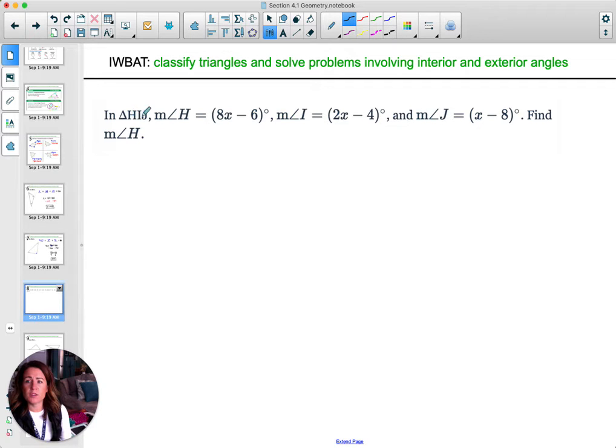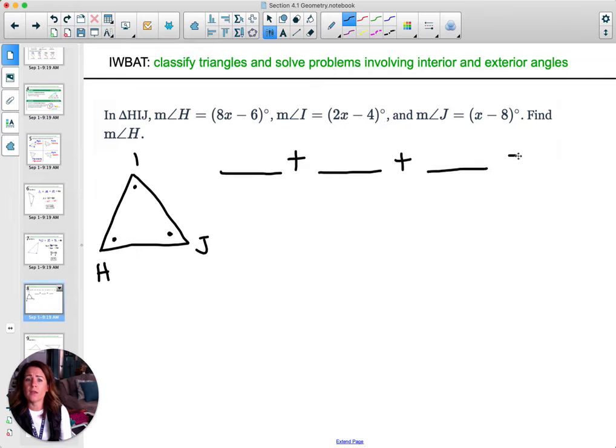This one just gives you the triangle, but it tells you the triangle's name, but it doesn't give you the picture. So feel free to draw a picture. Sometimes that's helpful. And you can just draw the triangle however you want. Label it however you want. H, I, J. And then you can look here and it gives you the expressions. So you can write those all in here. We've got one for H, one for I, and one for J. Those are interior angles. So we already know what the formula is, whether we draw the picture for this one or not. We know that these three interior angles total 180. So then we can just plug them in. So we have H, I, and J.